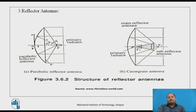Reflector antennas consist of the parabolic reflector antenna, which has a primary radiator, and the Cassegrain antenna, which includes a sub-reflector. These are umbrella-like structures with the capability of directing the radiation pattern in a particular direction.